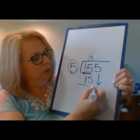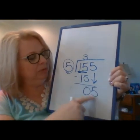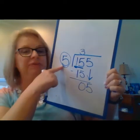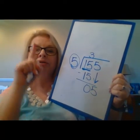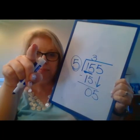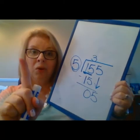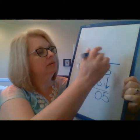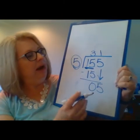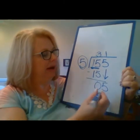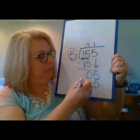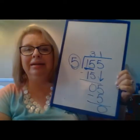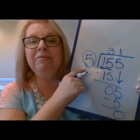Then we bring down — we're going to bring down the five. How many times will five go into itself? What is five divided by five? Start with your finger in the sky, hop down one hop and you're at five, so the answer is one. So we put the answer up here. Now I multiply: one times five is five. Then I subtract: five minus five is zero. And there's nothing to bring down, so I'm done. 155 divided by five is 31.